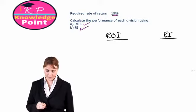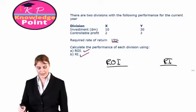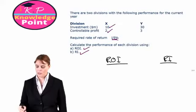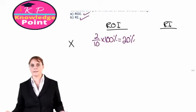And we've got our first division, division X. So remember return on investment is just going to be our profit before interest and tax divided by our investment or our capital employed. Doing a quick calculation then, we've got 2 divided by 10 multiplied by 100% equals 20%. Easy.